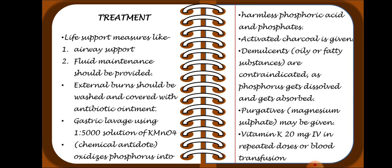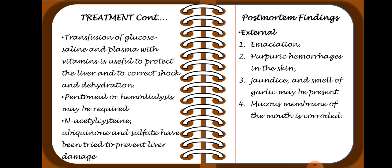If hematological signs such as epistaxis and hemorrhage in mucosal membranes and viscera appear in the secondary stage, Vitamin K 20 mg IV in repeated doses or blood transfusion should be given. Transfusion of glucose saline and plasma with vitamins is useful to protect the liver and to correct shock and dehydration. Peritoneal dialysis and hemodialysis may be required. N-acetylcysteine and ubiquinone sulfate have been tried to prevent liver failure.